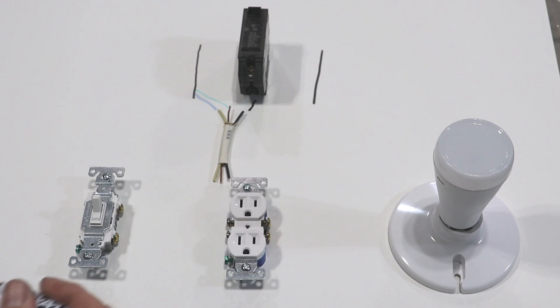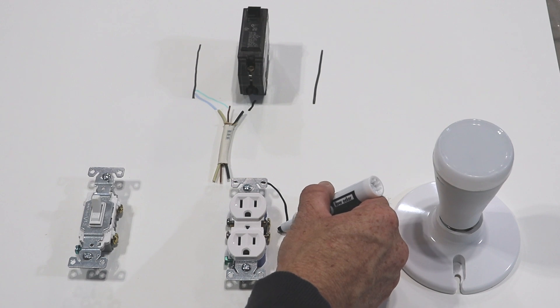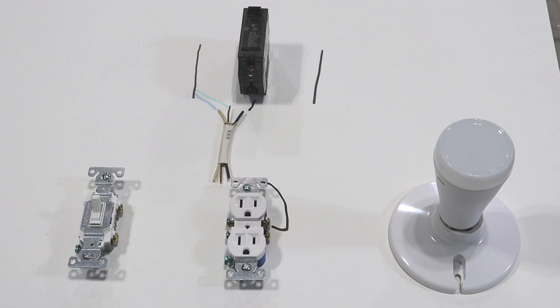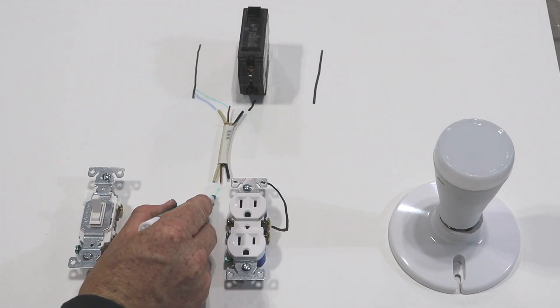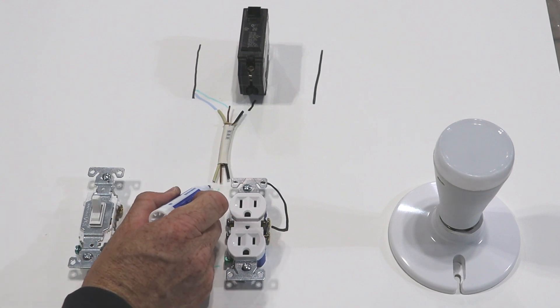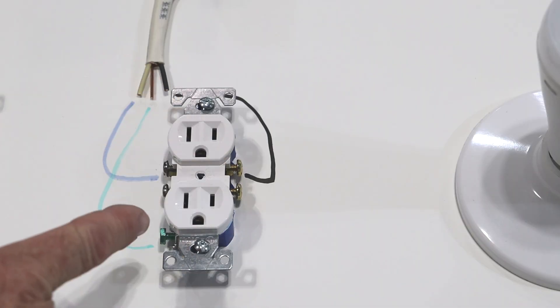Now in a regular outlet it's going to be the same thing. You're going to have your black wire come over and hook up to your outlet. Your ground wire is going to come over to your ground screw. And your neutral wire is going to come over to your silver screws. Right now this entire outlet is hot if the breaker is on.